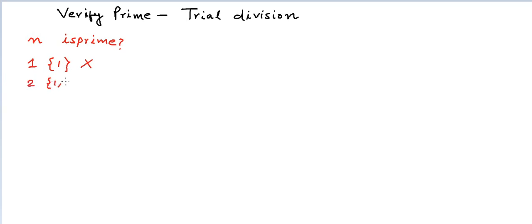Two can be divided by one and two. This is a prime number. Three again can be divided by one and three. So this is a prime number.